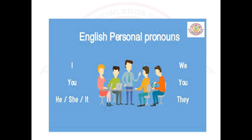You can see the personal pronouns chart here. Singular: I; plural: we. Singular: you; plural: you. Singular: he, she, or it; in plural we use they.